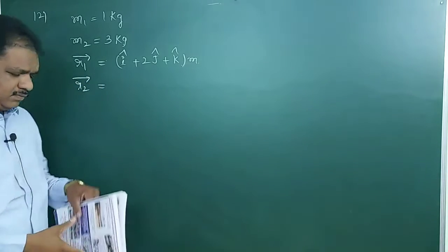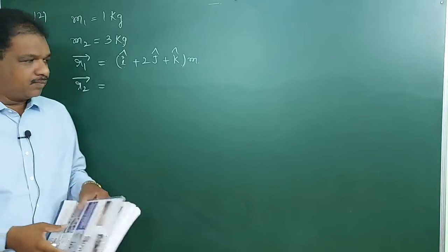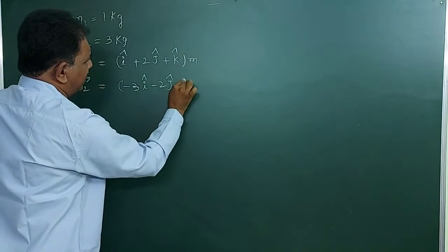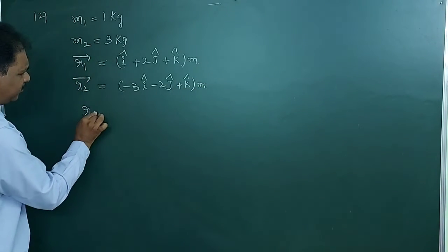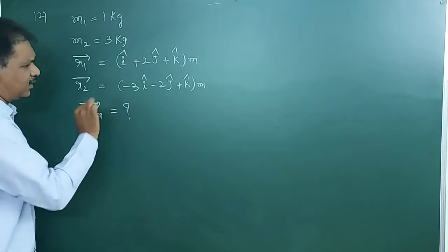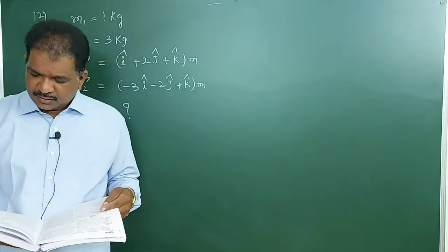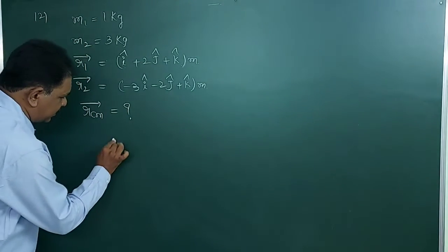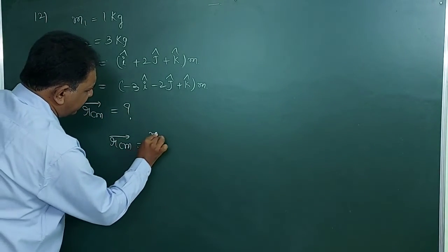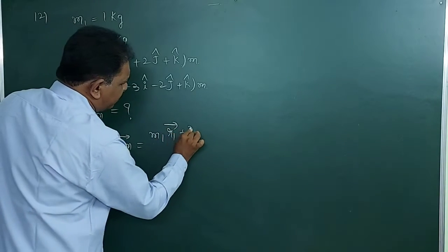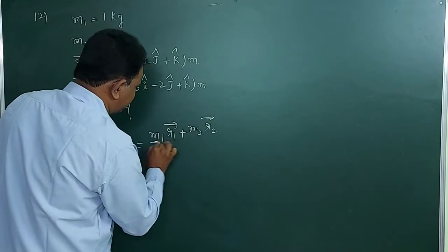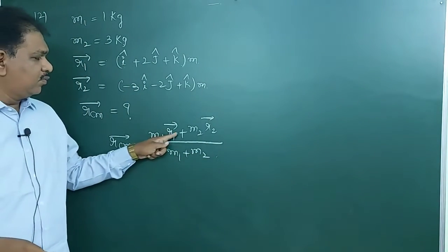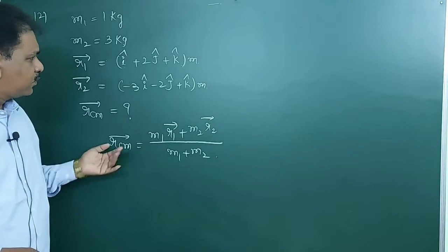Position vector of the second body is minus 3i-cap minus 2j-cap plus k-cap meters. Find the position vector of the center of mass. The formula for position vector of center of mass is: r_cm bar equals m1·r1 bar plus m2·r2 bar, divided by m1 plus m2. They gave m1, r1, m2, r2 values — just substitute in this formula.